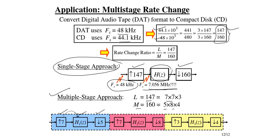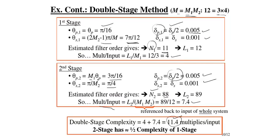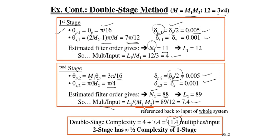For multi-stage implementation, we break L = 147 = 7×7×3 and M = 160 = 5×8×4. H1(z) acts as a post-filter for the up-sampler and a pre-filter for the down-sampler. Breaking the single stage into three stages significantly reduces complexity. As an exercise, try different orderings of the factors and compute the filter order and complexity for each stage.